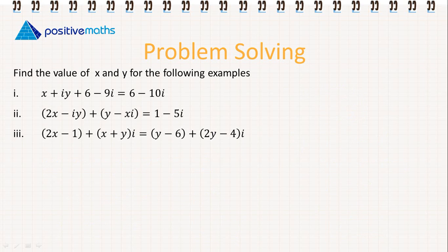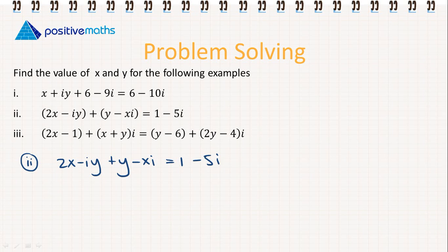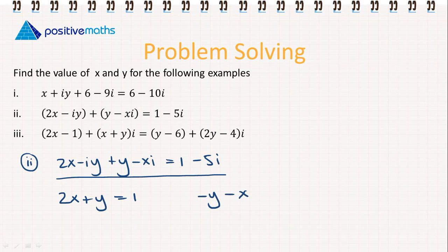Let's look at part 2. We have 2x minus iy plus x is equal to 1 minus 5i. Again we let the real parts equal the real parts and the imaginary parts equal the imaginary parts. So we have 2x plus y is equal to 1, and we have minus y minus x is equal to minus 5.